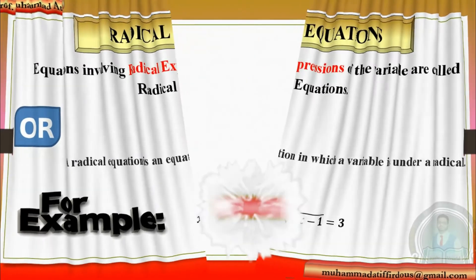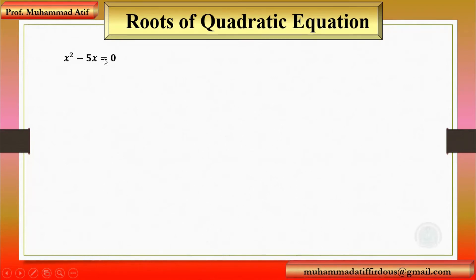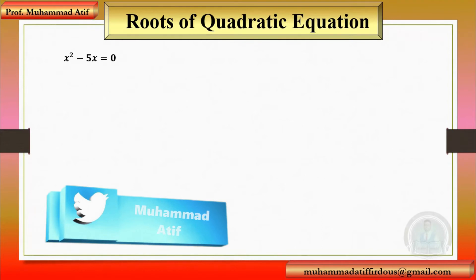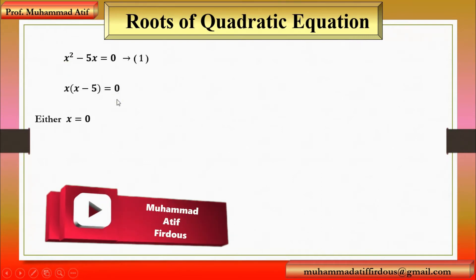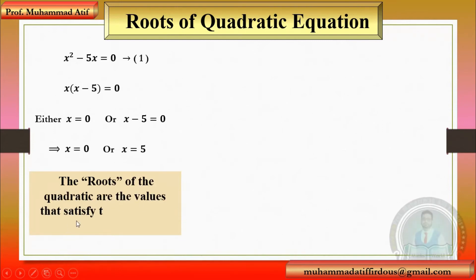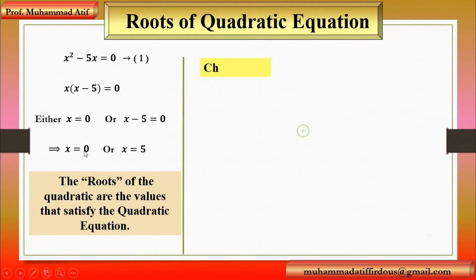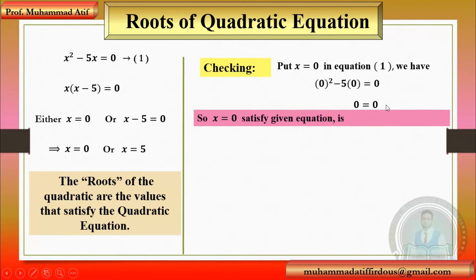Now I am going to discuss the roots of a given quadratic equation. For example, if we have the equation x squared minus 5x equals 0, I want to find the roots. By taking x common on the left-hand side, we have x(x minus 5), so either x equals 0 or x equals 5. To verify: put x equals 0 into the equation — 0 squared minus 5 times 0 equals 0, so 0 equals 0. Left-hand side equals right-hand side, so x equals 0 satisfies the given equation and is a root.